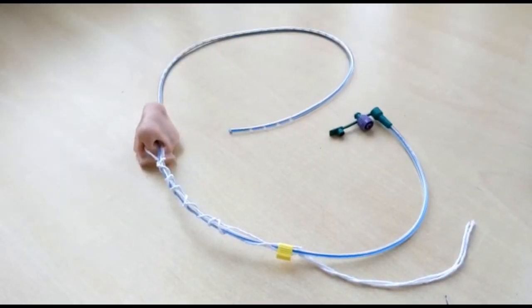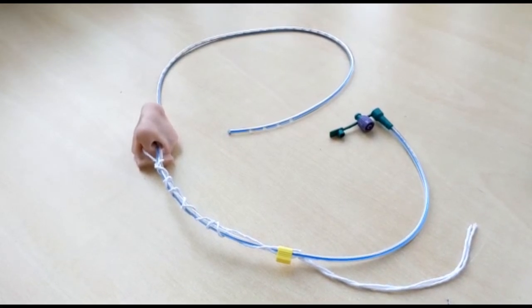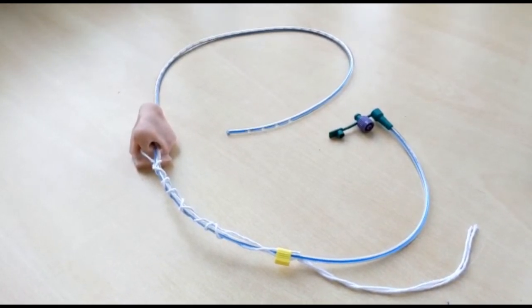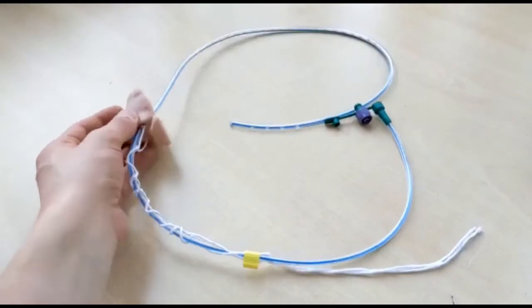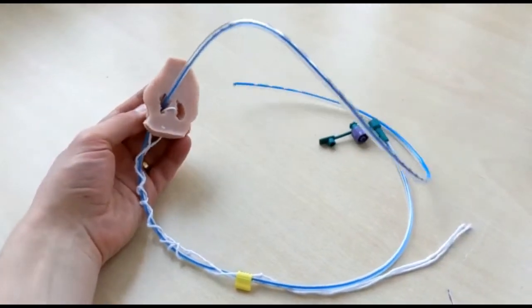Keeping nasogastric feeding tubes securely in place is essential in critical care. Bridling the feeding tube with the CoreGrip bridle kit works by anchoring the tube on the vomer bone with string.